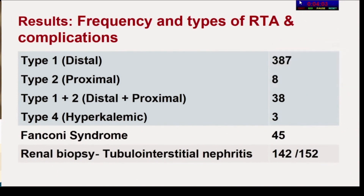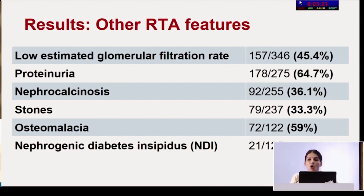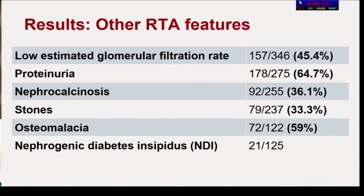Regarding RTA types: type 1 was most common in 387 patients, type 2 in 8, both types 1 and 2 in 38, hyperkalemic in 3, and Fanconi's syndrome in 45. Renal biopsy showed tubular interstitial nephritis in 142 out of 152 patients biopsied. Other renal features included low eGFR in 45.4%, proteinuria in 64.7%, nephrocalcinosis and stones in over 30%, osteomalacia in 59%, and nephrogenic diabetes insipidus in 21 patients. A key message is that not all patients are evaluated for all complications.